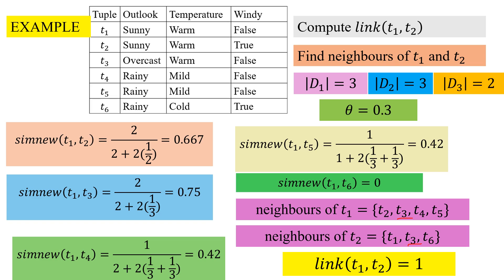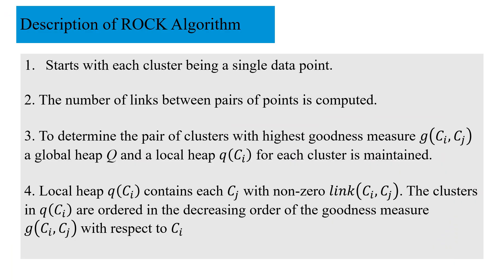Now we discuss the ROCK algorithm. This starts with each cluster being a single data point like all other hierarchical algorithms. The number of links between pairs is computed, and a global heap Q and a local heap is maintained for each cluster.